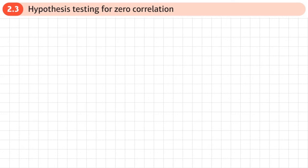This is the third section of chapter 2 on correlation, and this section is about hypothesis testing for zero correlation. This gets covered in the year 2 applied correlation chapter, so I'm not going to go through it in a great amount of detail — I'll put a link in the description. The key differences here are that we calculate the PMCC manually rather than using a calculator, and we also use Spearman's rank as a way of deciding whether there's a correlation or not.